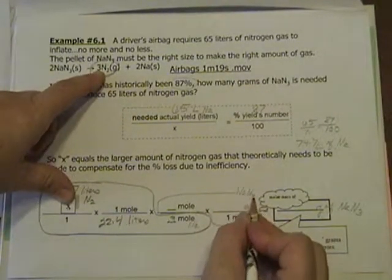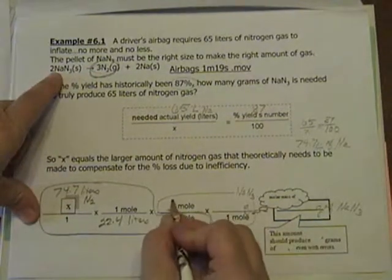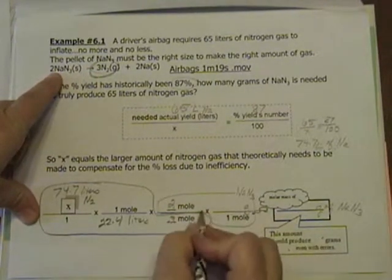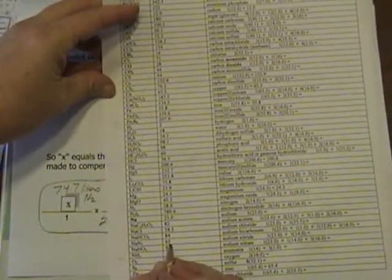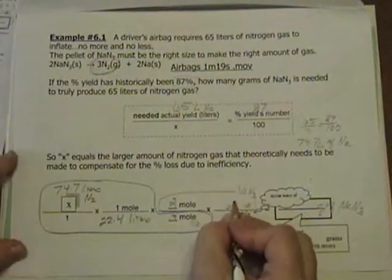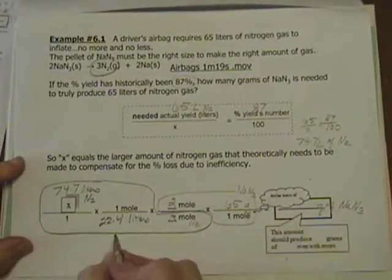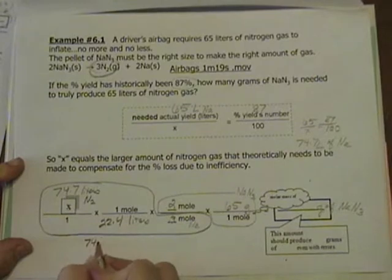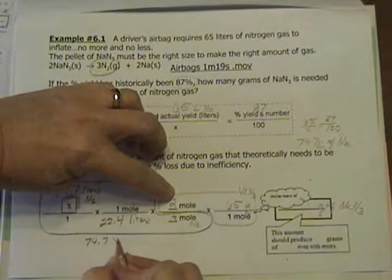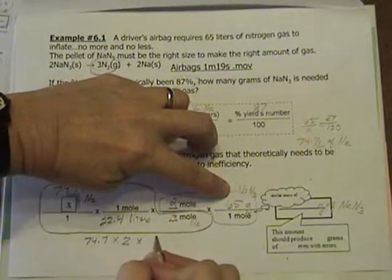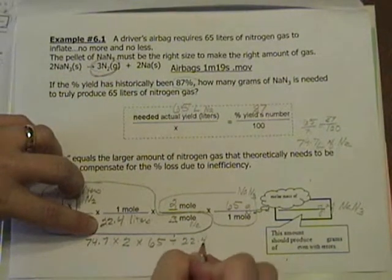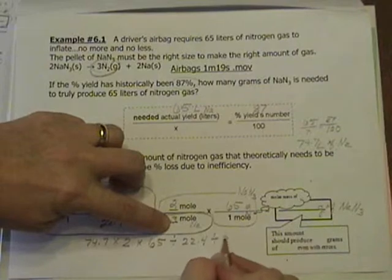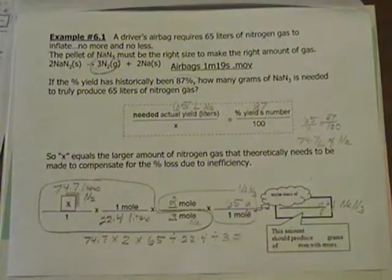Because it's part of the gun, now we need the molar mass of NaN3. We look it up. NaN3 is 65 grams. We punch it in the calculator: 74.7 times 2 times 65 divided by 22.4 divided by 3 equals. This amount of NaN3 should produce the 65 liters of N2 gas, even with the errors that are associated with labs.